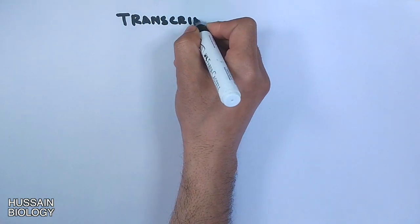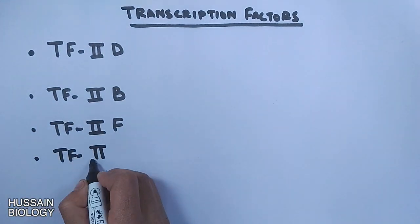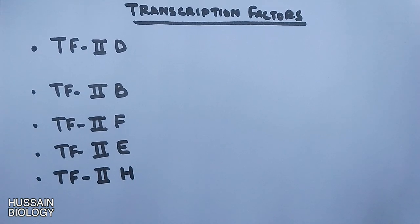Now let's jump towards the transcription factors in eukaryotic transcription. We have 5 different transcription factors: TF2D, TF2B, TF2F, TF2E, and TF2H.